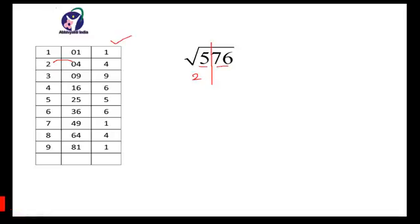Now take 76 — its unit place digit is 6. Just see where 6 occurs: 4 fours are 16, and 6 sixes are 36. You can check this orally. There is no need to draw a table — 4 fours are 16, means it should be 24 or 26. So the square root of 576 should be 24 or 26. You can check it easily whether it is 24 or 26 by using basic mathematics. Find the square of 24.